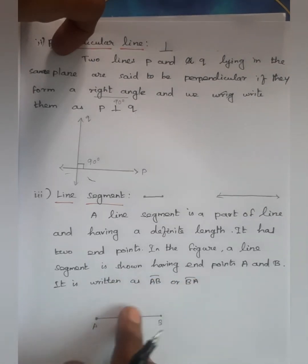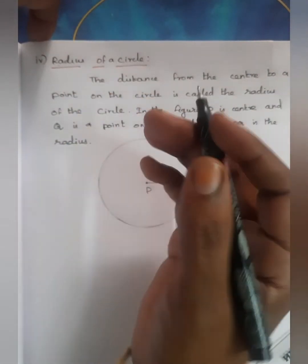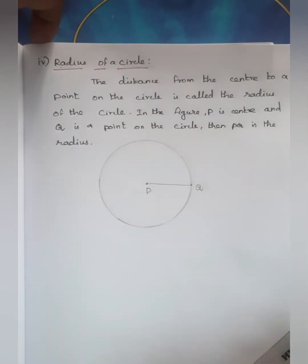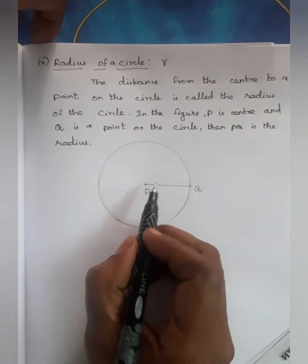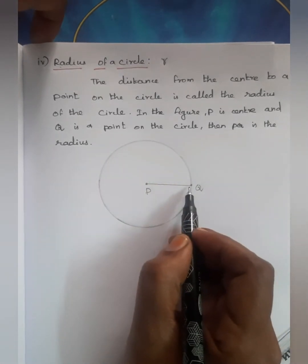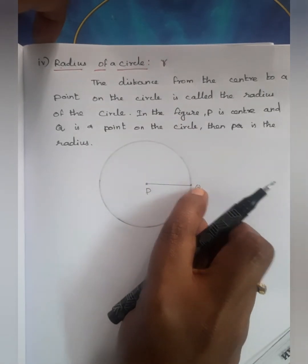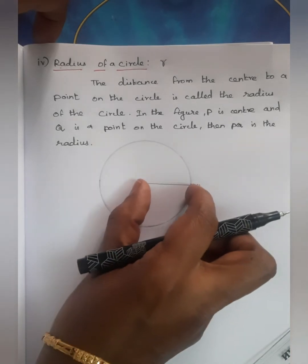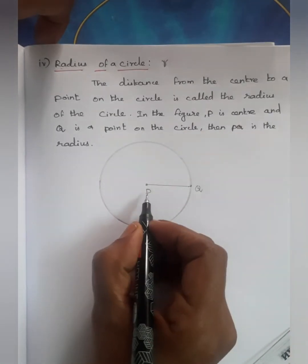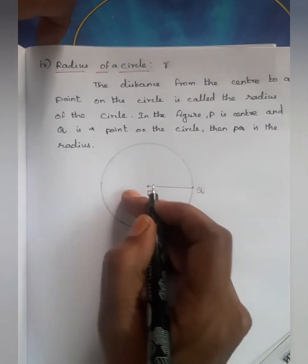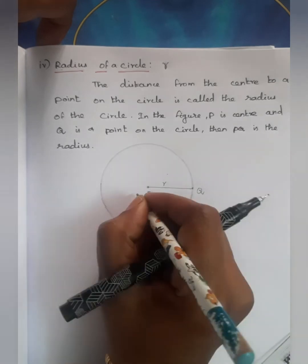The radius is the distance from the center to a point on the circle. Center to a point on the circle is called the radius. In the figure, P is the center and Q is a point on the circle, so PQ is the radius. This distance is R.